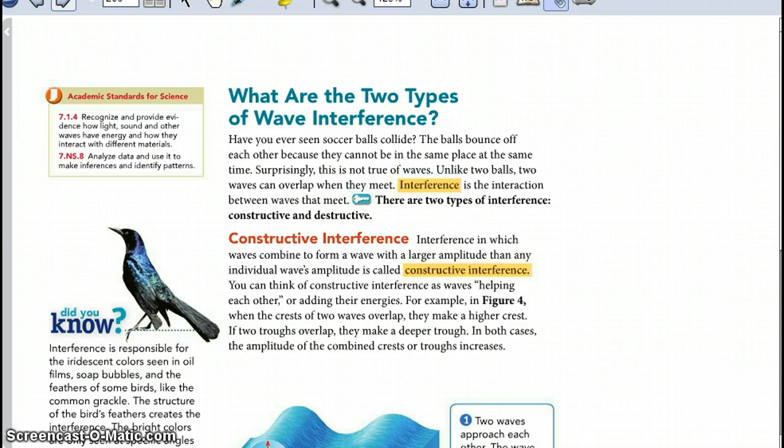What are the two types of wave interference? Have you ever seen soccer balls collide? The balls bounce off each other because they cannot be in the same place at the same time. Surprisingly, this is not true of waves. Unlike two balls, two waves can overlap when they meet. Interference is the interaction between waves that meet. There are two types of interference: constructive and destructive.